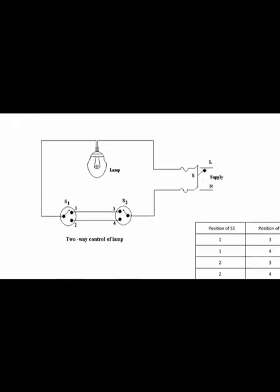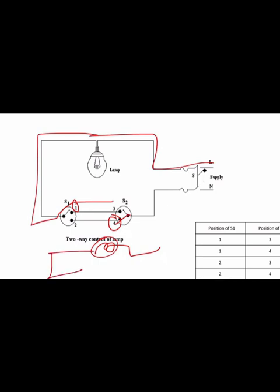In the second case, when switch S1 is connected at position one and switch S2 is connected at position four, the current goes from line to lamp, lamp to switch S1 at position one, then one to three. But S2 is connected to four, not three, so there is an open circuit with no closed path. That's why the lamp will not glow.